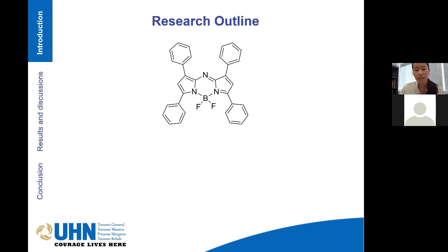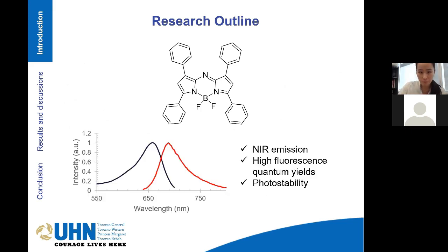My interest is with the aza-BODIPY compound. It's a near-infrared chromophore that has some outstanding optical properties. Aza-BODIPY generally has near-infrared absorption and emission, and it can also be modified with different moieties and at different positions. Generally, they have very high fluorescent quantum yields for a near-infrared dye, and they also have excellent photostability that is not commonly seen in near-infrared dyes.